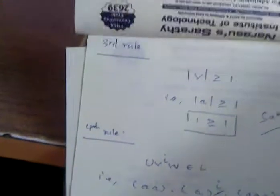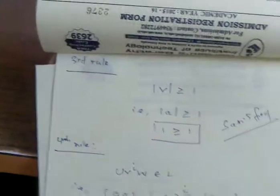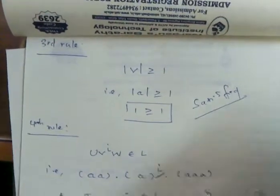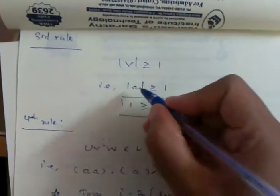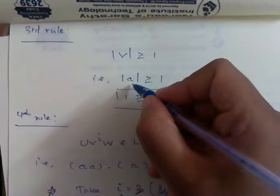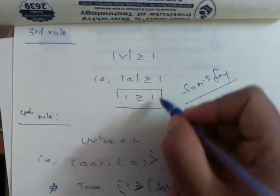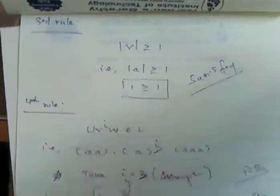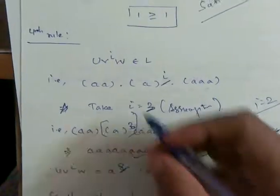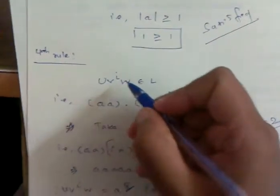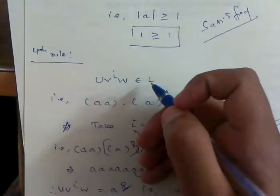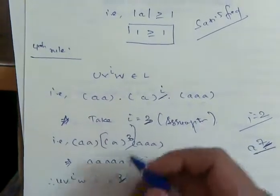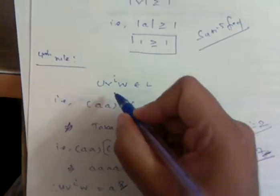The third rule is: |v| is greater than or equal to 1. Since v equals a, |v| equals 1, so 1 is greater than or equal to 1 — satisfied. The last rule is: u v^i w must belong to L or not, where i is greater than or equal to 1.